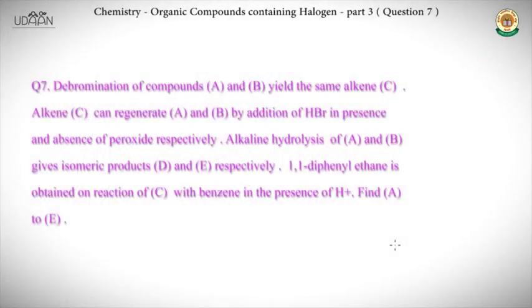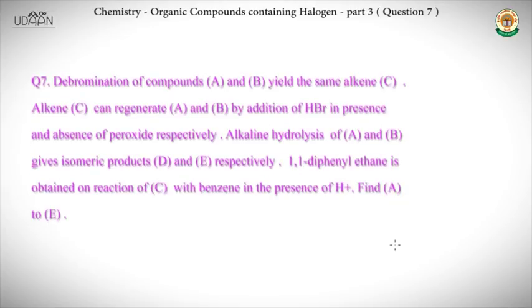Question 7.1: Debromination of compounds A and B yield the same alkene C. Alkene C can regenerate A and B by addition of HBr in presence and absence of peroxide respectively. Alkaline hydrolysis of A and B gives isomeric products D and E respectively. 1,1-diphenylethane is obtained on reaction of C with benzene in the presence of H+. Find A to E.